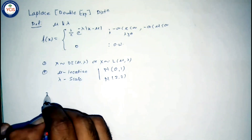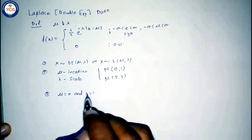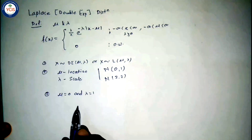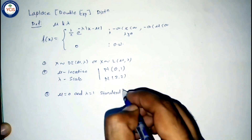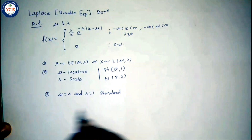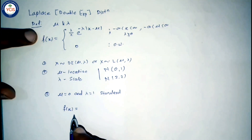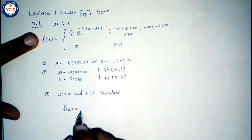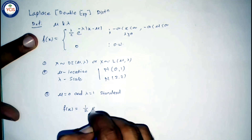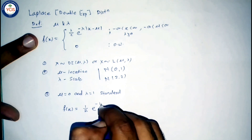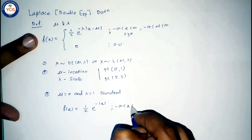When mu=0 and lambda=1, the double exponential distribution is known as the standard double exponential distribution, and its PDF is: f(x) = (1/2) * e raised to minus modulus of x, where x lies between minus infinity to infinity.